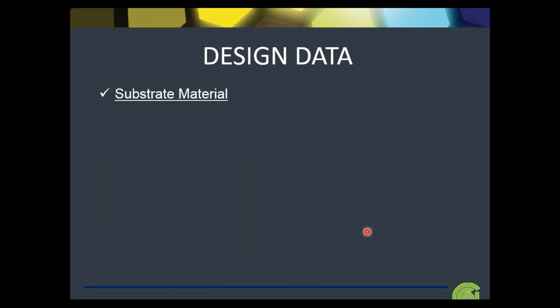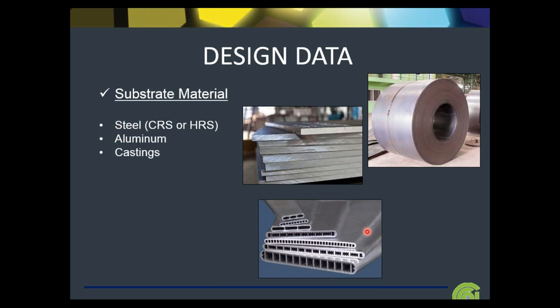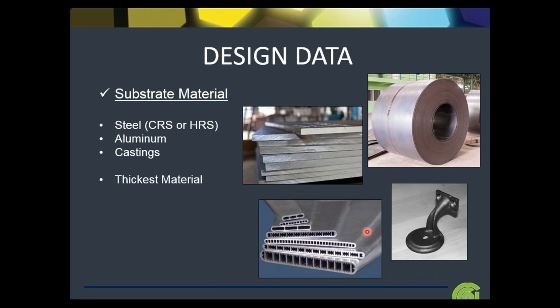Substrate material: once we know the size of the product, we ask what the substrate material is. Is it steel — cold rolled or hot rolled? Aluminum or some type of casting? What is the thickest material we're going to be processing? This is critical because it helps us design the curing capabilities, whether we're talking liquid coatings or powder coatings — we need to get that substrate up to temperature and hold it there. We also need to know the maximum weight of the product for maneuverability throughout the process, whether automated or manual, to design the appropriate material handling.